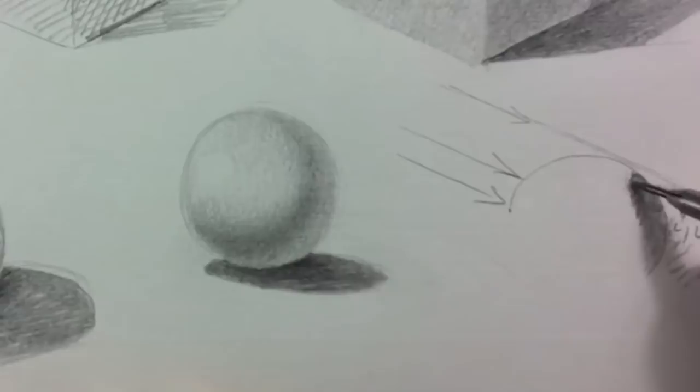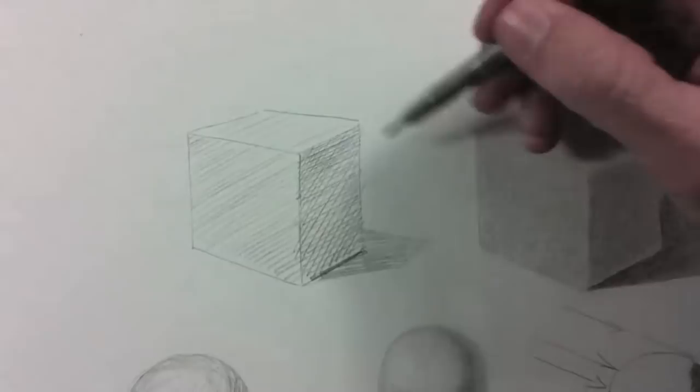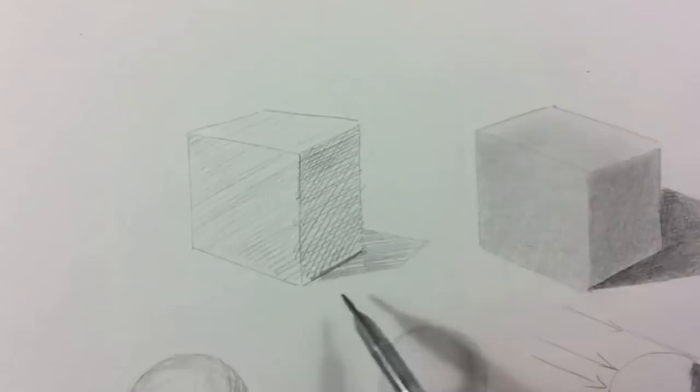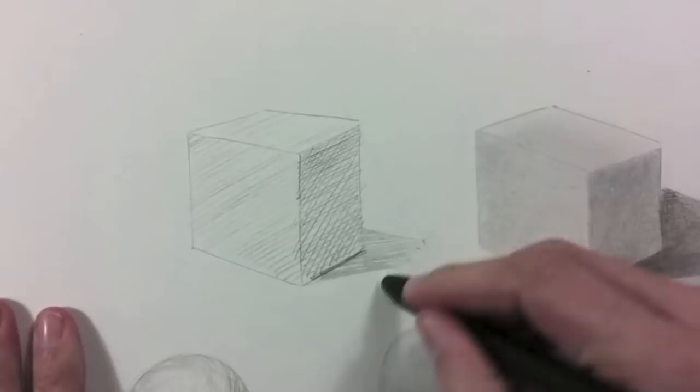Now, in regards to where the cast shadow falls, that depends where the light is coming from. Let's follow the direction of the line and see that this corner goes here and this one here. And so, the shadow will be something like that.